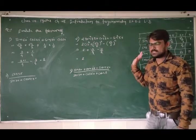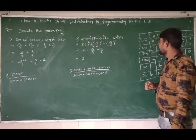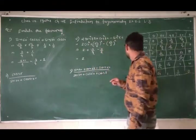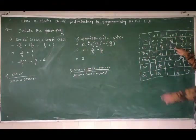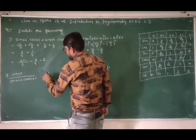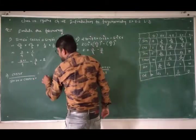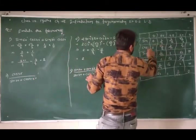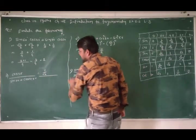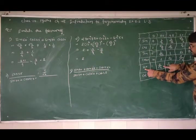Third question — देखिए इसमें क्या करना है: cos45 / sec30 + cos30. cos45 की value कितनी बनेगी? cos45 = 1/√2. लिख देता हूँ: 1/√2 divided by sec30.